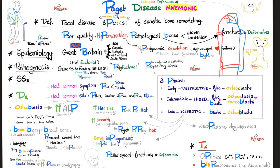Many patients are asymptomatic. When symptoms occur, the most common is pain — bone pain and joint pain. The most commonly affected bones are the pelvis, lumbar spine, scapula, and tibia.